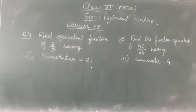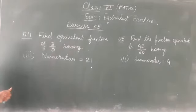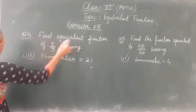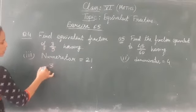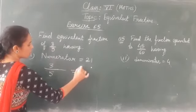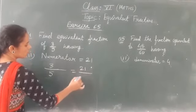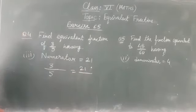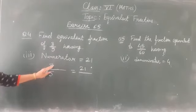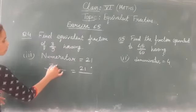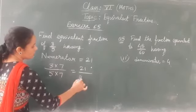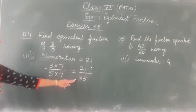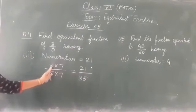Now I will do some questions based on equivalent fractions. This is question number 4 of your exercise 6.5. Find equivalent fraction of 3 upon 5 having numerator 21. It means we have to write an equivalent fraction of this having numerator 21. So it should be multiplied by 7 to get 21. Numerator and denominator should be multiplied by 7. So 21 upon 35 is the equivalent fraction of 3 upon 5.